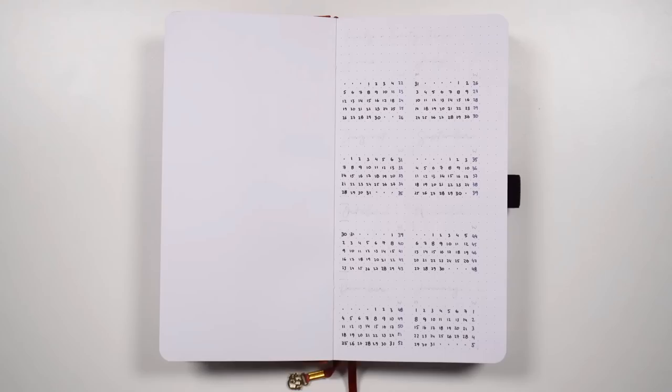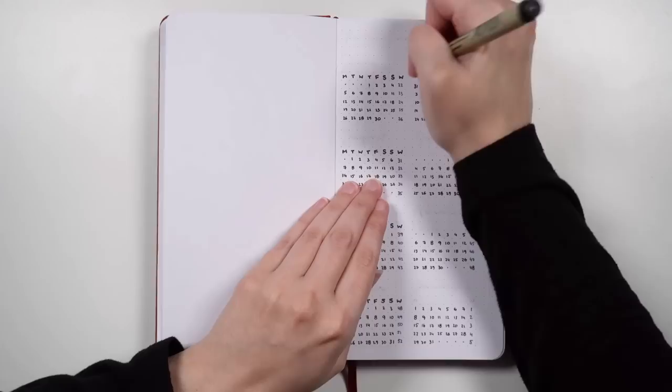Normally when I do a year at a glance, I would fit a full calendar on one page. Well, when I'm working in an A5, I would. So moving to the travellers is certainly different in that respect.